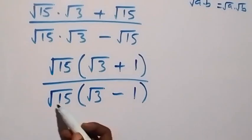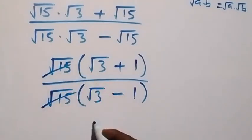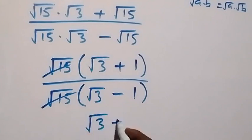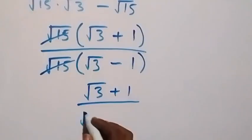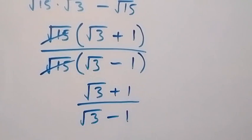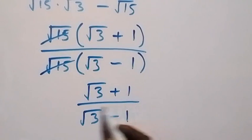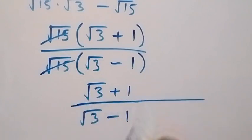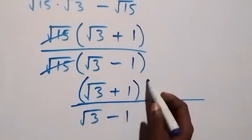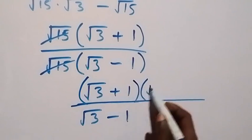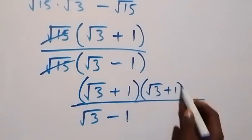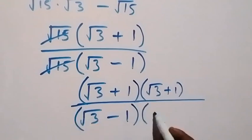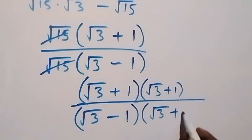Here the root 15 cancels out, and we are left with (root 3 plus 1) over (root 3 minus 1). Now we can rationalize this by multiplying both the numerator and denominator by the conjugate of the denominator, which is (root 3 plus 1).